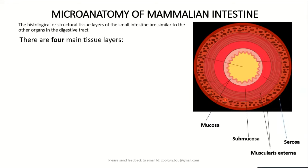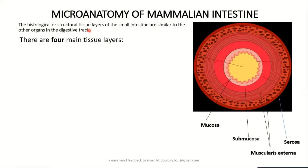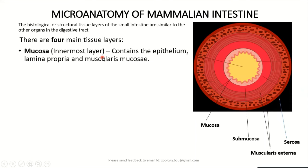With those brief anatomical features, let us now look at the actual histological structure of the small intestine — the micro-anatomy of the mammalian intestine. Histologically, the small intestine is similar to other organs of the digestive system. It consists of four tissue layers. The first and innermost layer of the wall of the small intestine is called the mucosa.